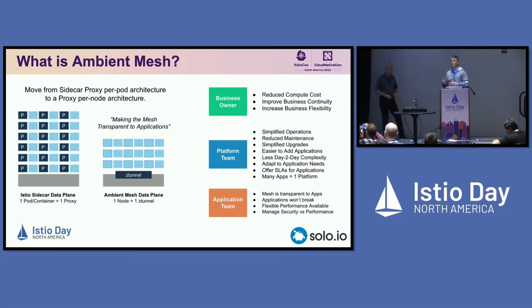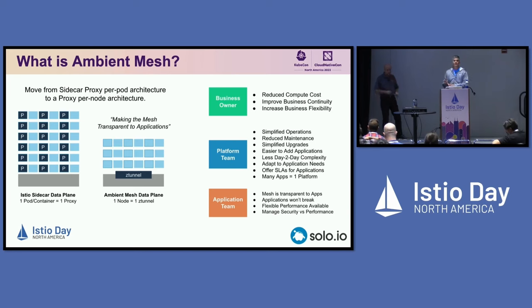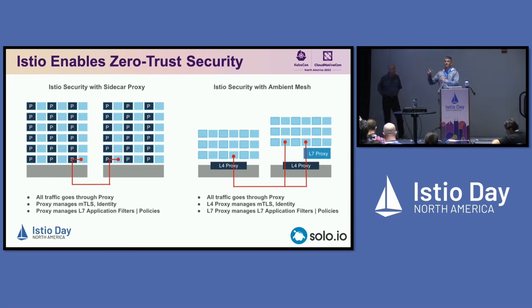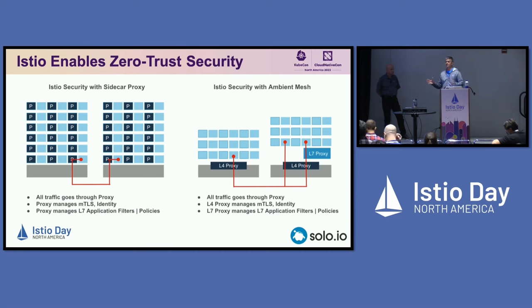The Z-Tunnel is responsible for creating MTLS connections on behalf of applications, just like you see in the sidecar version of the service mesh today. The service mesh also provides telemetry and observability, and layer 7 traffic routing and load balancing — we move those into another layer called the waypoint proxy layer. When you need those layer 7 capabilities, the Z-Tunnel is smart enough to route traffic through one of these layer 7 proxies, deployed one per workload identity.